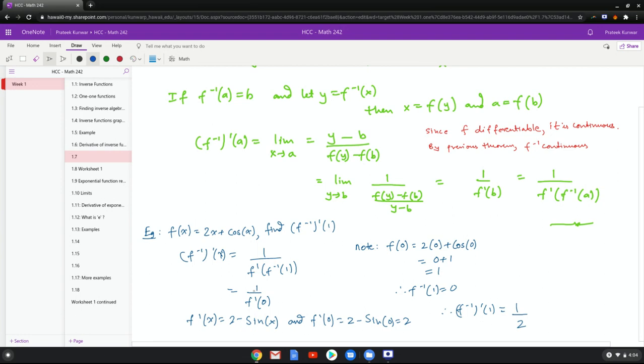To take the derivative of 2x is 2, the derivative of cosine is negative sine x, and at 0 this becomes 2. So the derivative of f inverse at 1 is 1/2. This is neat: you did not have to find the inverse expression.